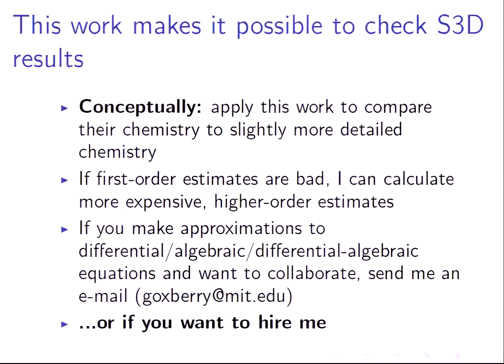If you want to apply this work to compare chemistry, you can take a slightly more detailed reaction mechanism and compare results between the two to get roughly an idea of how much error you're introducing by approximating and simplifying the chemistry. If the first-order estimates are not as tight as we want, as in the oscillatory case, you can calculate higher-order estimates that are more expensive but more accurate. And if you need approximations for any of the work you do, email me — or if you want to hire me for a job, I'm graduating in a year and I need to pay the bills, so send me an email.